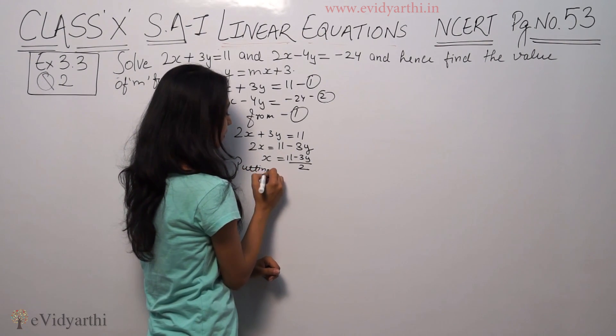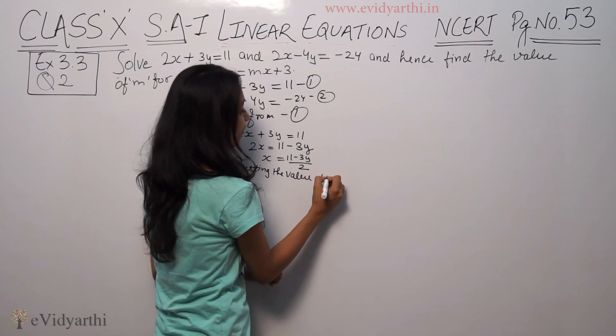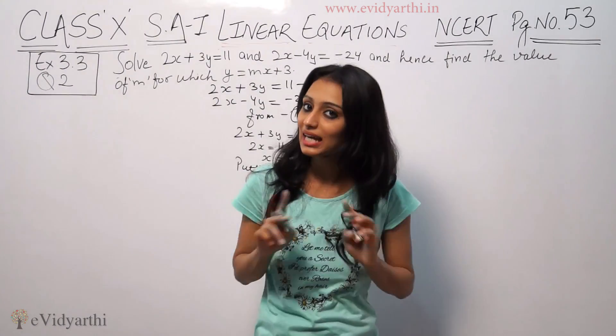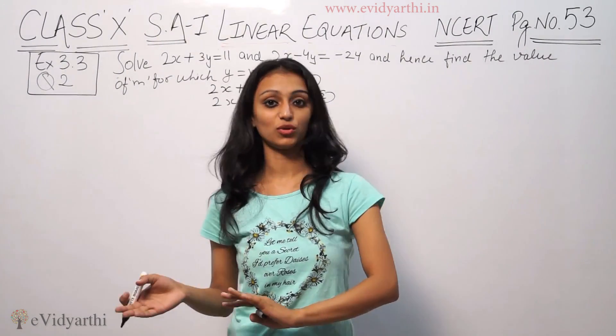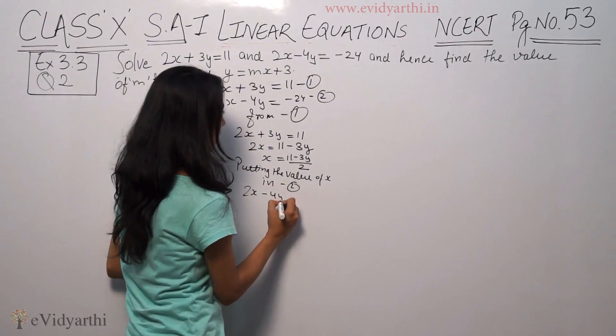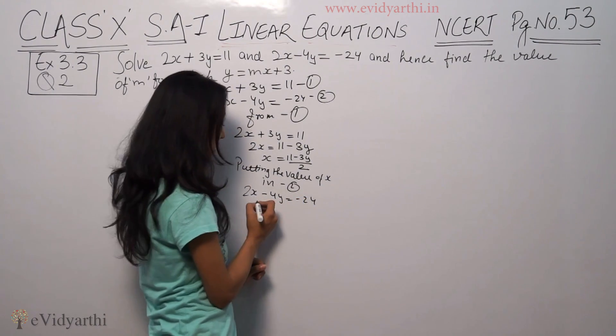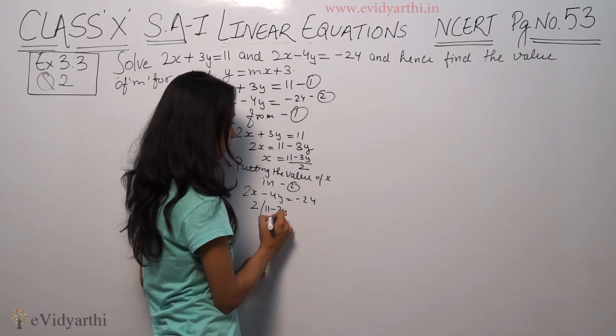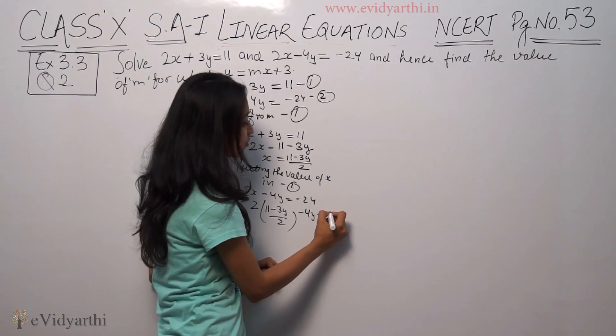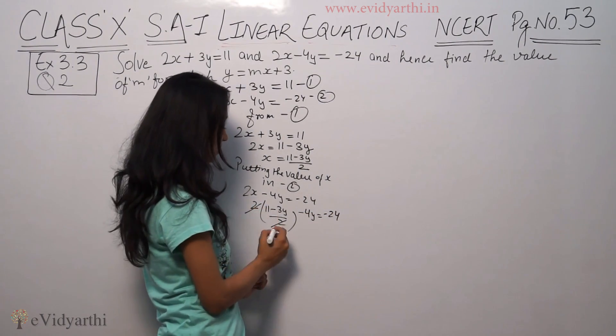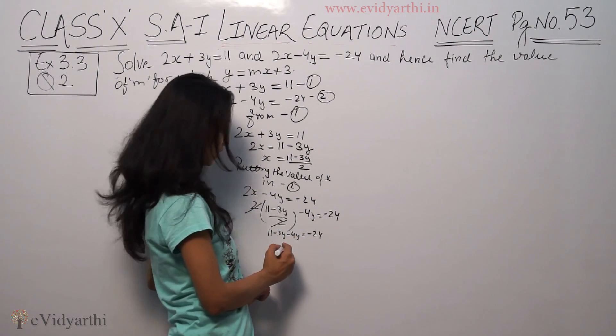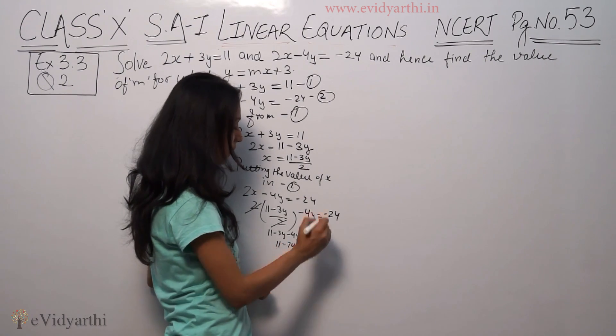Now putting the value of x in second equation. So 2 times 11 minus 3y upon 2 minus 4y equals minus 24. 2 and 2 cancel, 11 minus 3y minus 4y equals minus 24, 11 minus 7y equals minus 24.